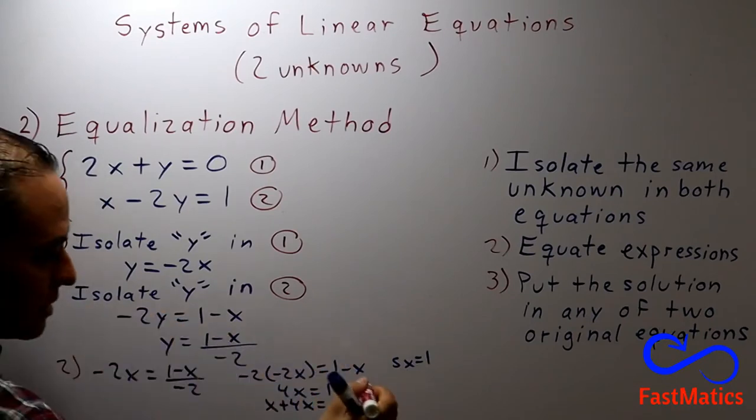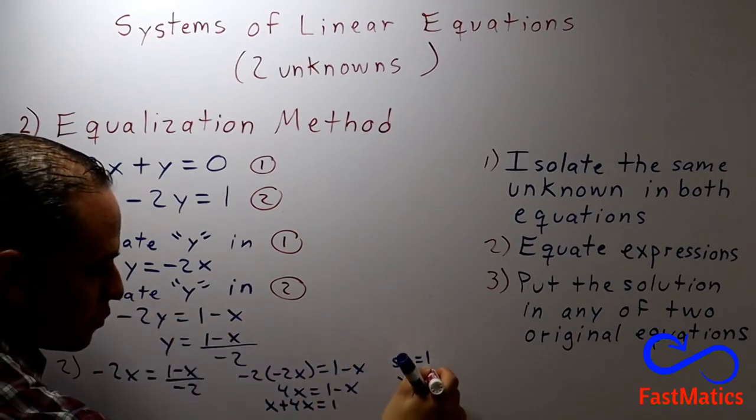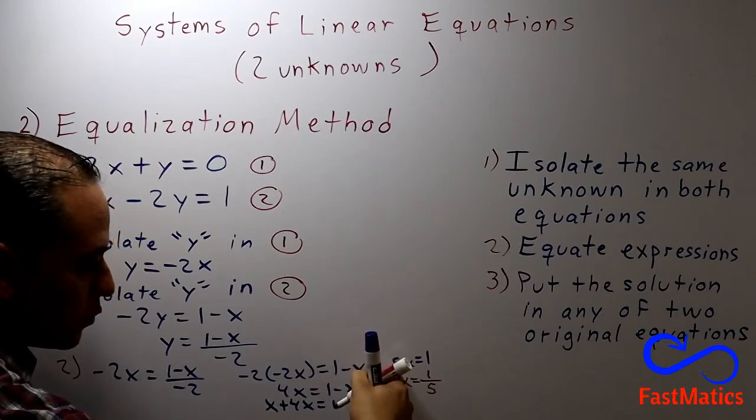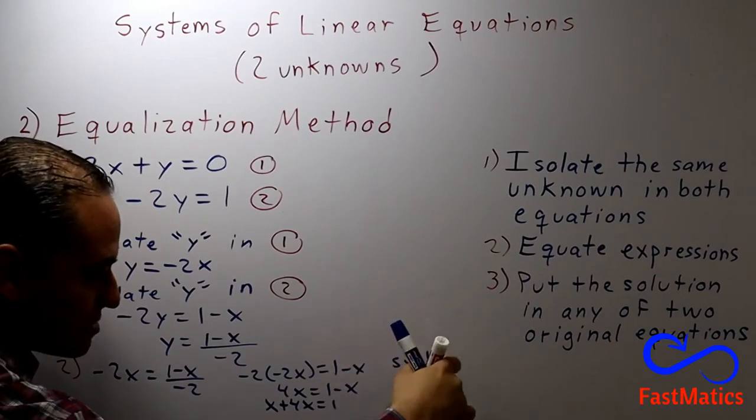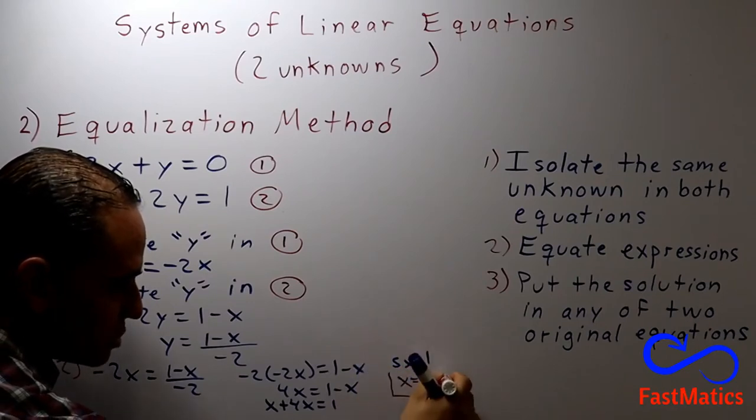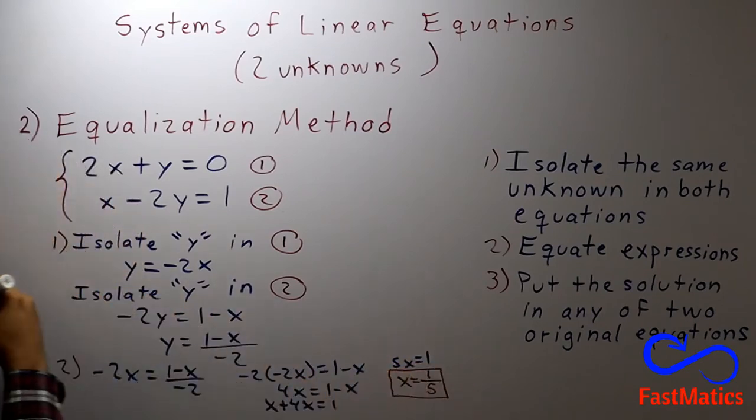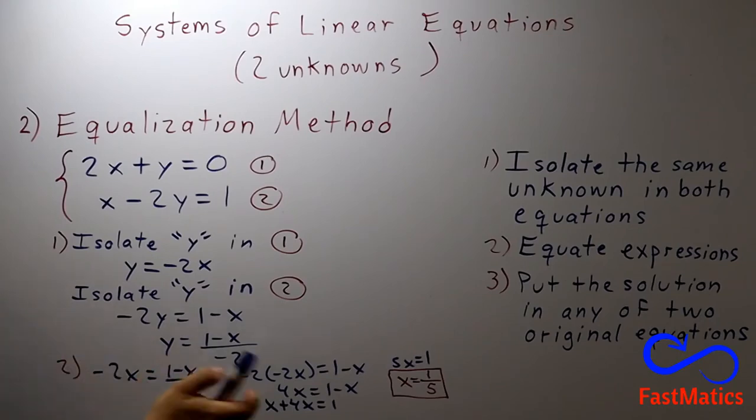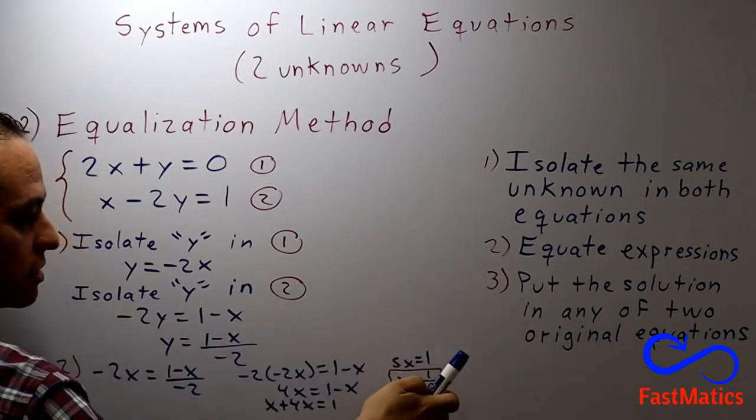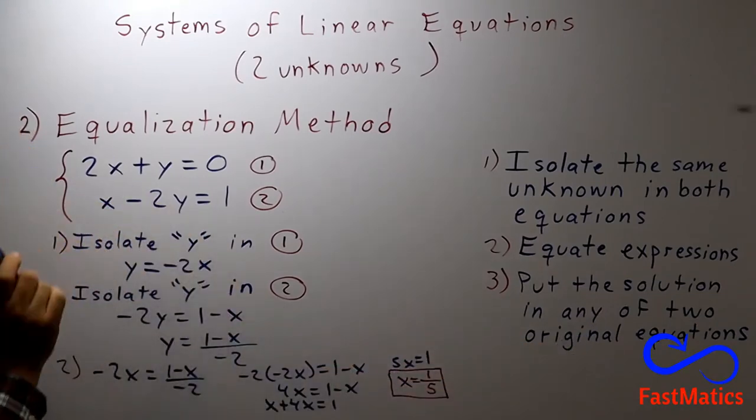Finally x equals 1 over 5. Remember that when you have a number with the x, you pass the number to the denominator without changing the sign. Now I have the answer for x. But I need also the answer for y.